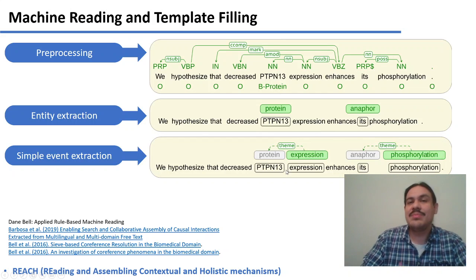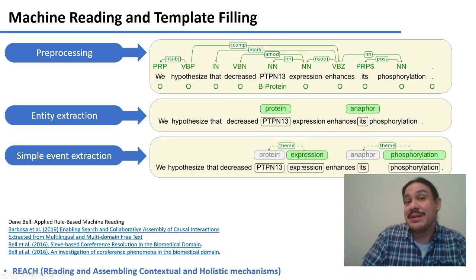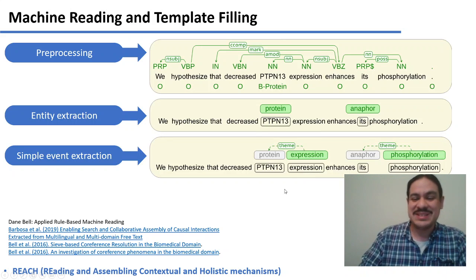Then they perform relationship extraction, where they try to figure out here that it's is related to a process, phosphorylation, and that this protein is related to an expression, to another process, an expression of the protein.